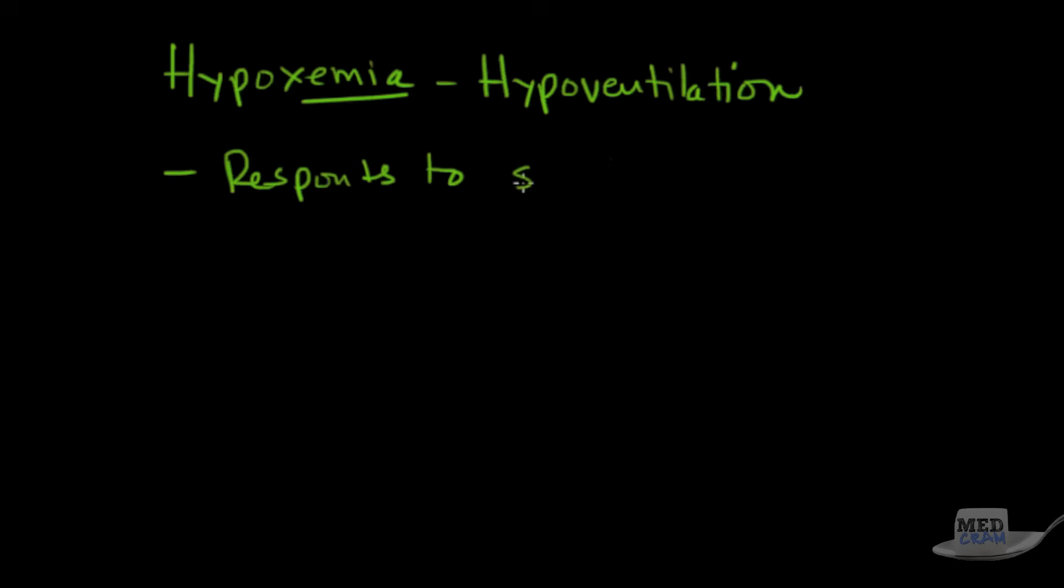So let's review what we've already talked about. So we've got hypoxemia. Remember, hypoxemia means in the blood. And we're talking about hypoventilation. So here are the key points about that. Number one, it responds to supplemental O2. We've noticed that also in diffusion abnormalities and also in high altitude.